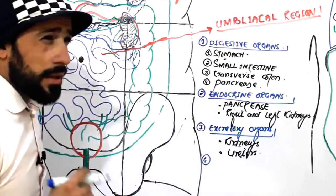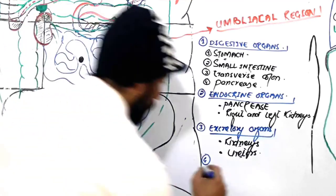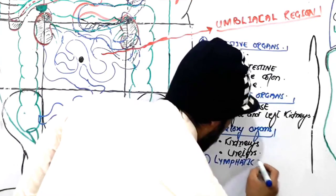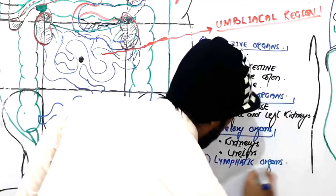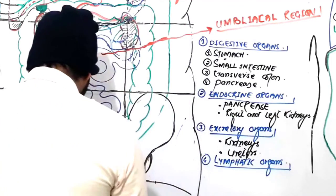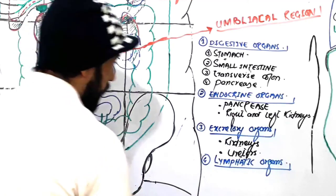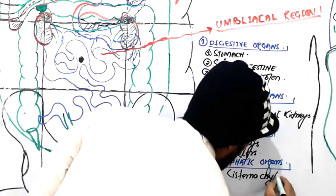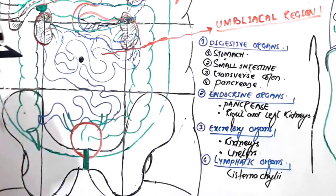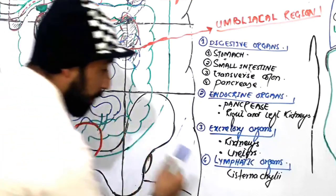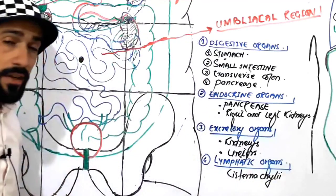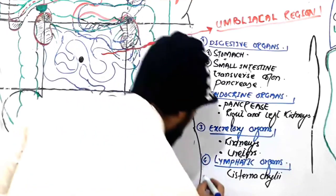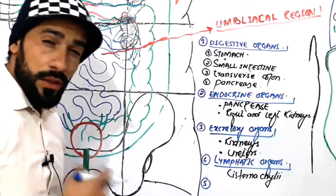The fourth group of organs: are there any lymphatic organs found in the umbilical region? Yes — the cisterna chyli is found in the umbilical region, playing a very important role in the drainage of lymphatics in this region.